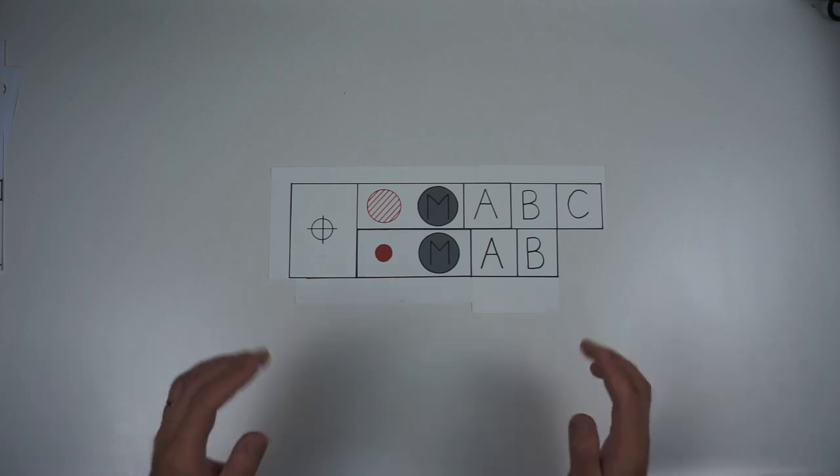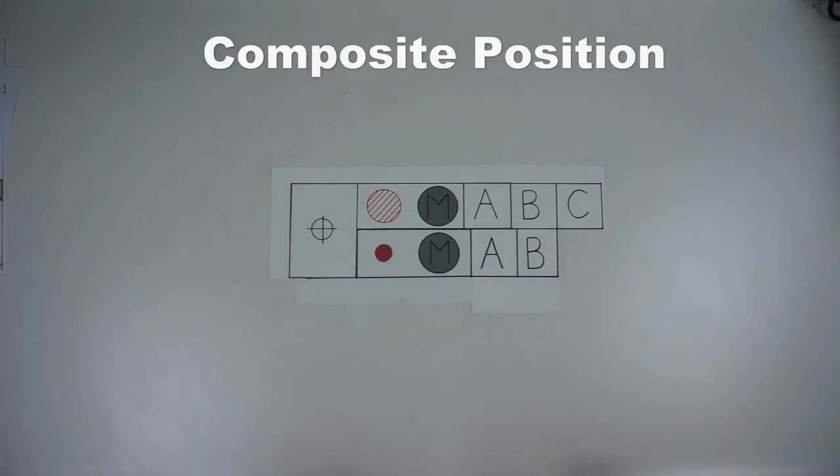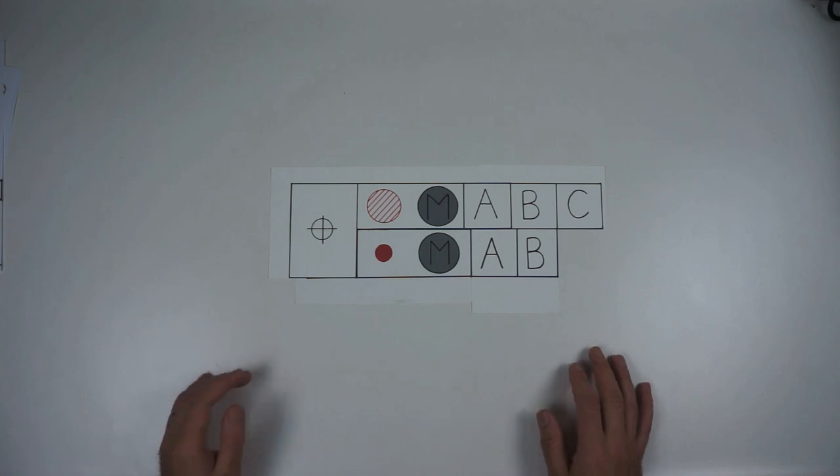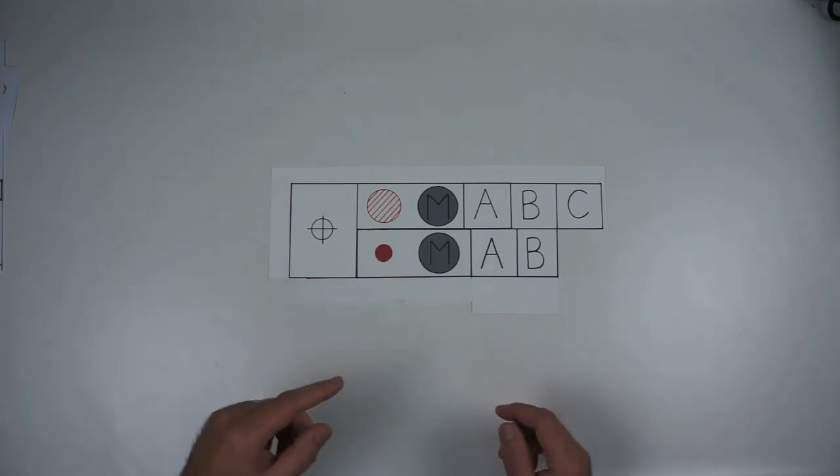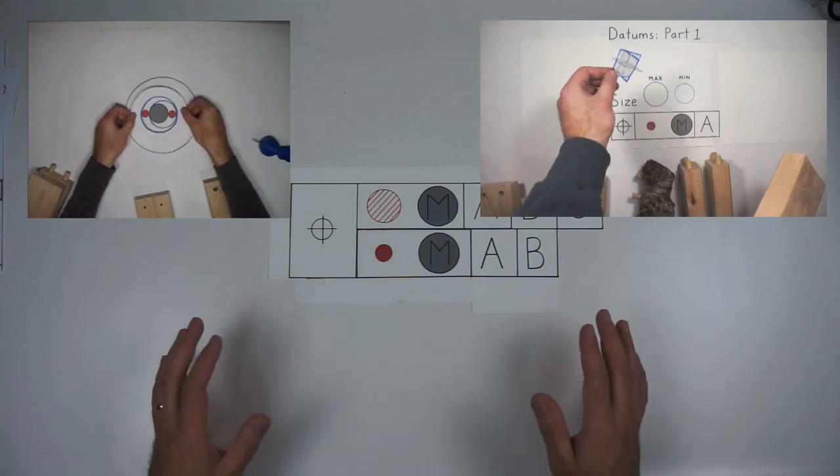Okay folks, here we are, probably the most requested topic of all: composite position tolerance. This is advanced class stuff. If you have not done the pegs and holes lesson one, two, three stuff on datums, you really ought to cover that.